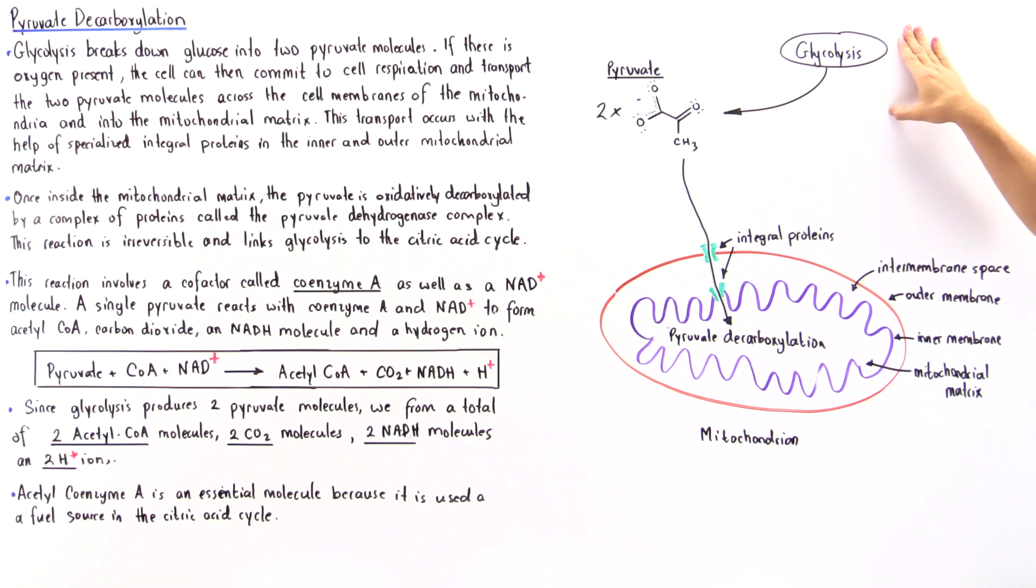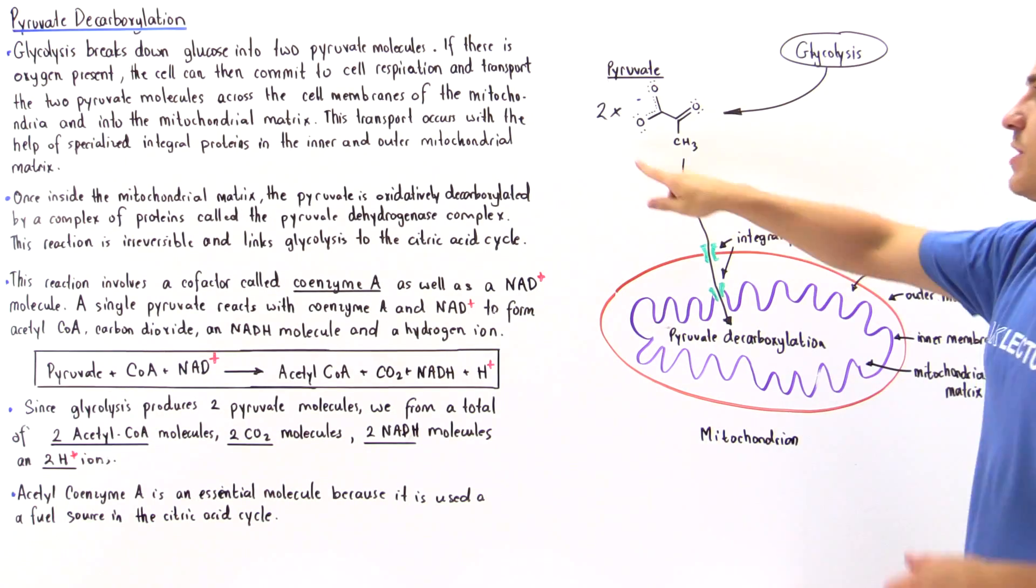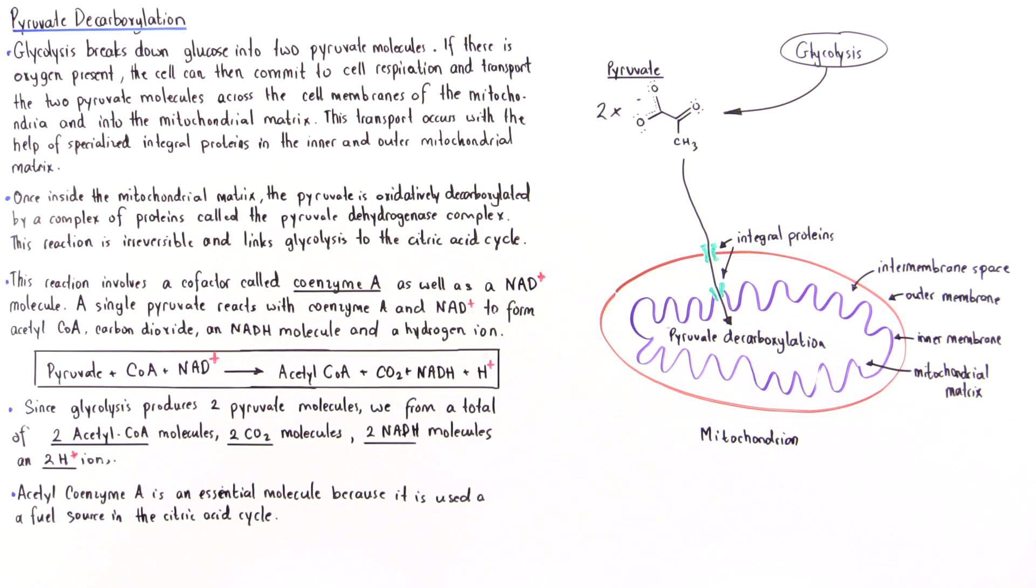For one glucose molecule that is broken down in glycolysis, we produce two pyruvate molecules as shown in this region.